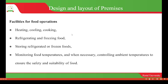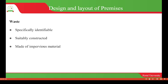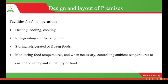Looking at the facilities for food operations, there should be facilities for heating, cooling, and cooking, as well as facilities for refrigeration and freezing of foods. There also has to be facilities for storing refrigerated and frozen foods, and facilities for monitoring food temperatures and, when necessary, controlling ambient temperatures to ensure that the food remains safe and suitable for human consumption.